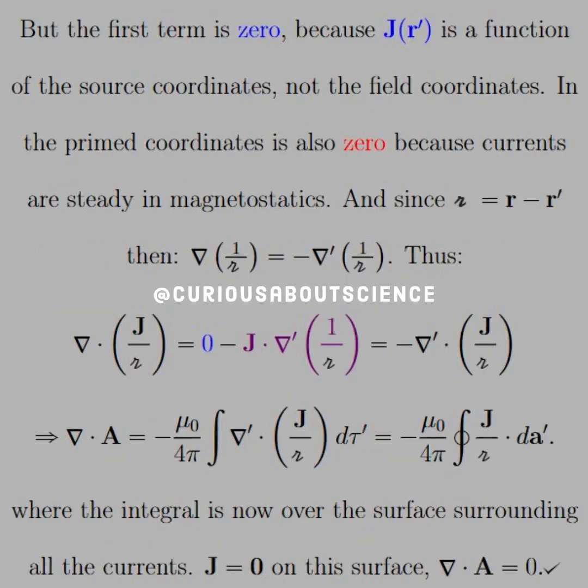The first term in that first product rule is 0 because j(r prime) is a function of the source coordinate, i.e. the prime coordinate, not the field coordinate, the unprimed coordinate. So when I'm taking the derivative of the unprimed coordinate, and my function is made of prime coordinates, it equals 0. Pretty simple there.